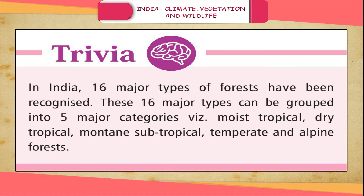Trivia: In India, 16 major types of forests have been recognized. These 16 major types can be grouped into 5 major categories, namely moist tropical, dry tropical, montane subtropical, temperate, and alpine forests.